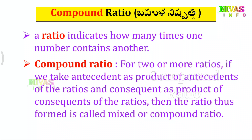We have a product, and that product is the first term in compound ratio. The second term is the product of the second terms. We multiply the antecedents together and the consequents together to get the compound ratio.